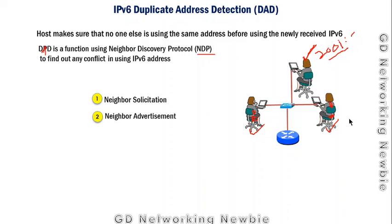If another host is using the same address, it responds with a Neighbor Advertisement message, advertising that it is also using that IPv6 address. If there is a conflict, the machines avoid using the duplicate address. This is how a client machine, before using its assigned IPv6 address, ensures no one else on the network is using the same address — because if two hosts share the same IPv6 address, communication will not be possible.